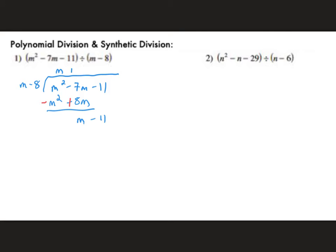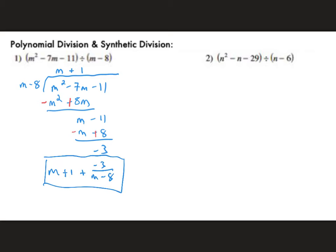The m² terms cancel — drop the next term and repeat. Multiply by 1 to match the leading term, giving m − 8. After the sign change, we're left with a remainder of negative 3. Write the answer as the quotient m + 1, plus the remainder written as −3/(m − 8). Either way of expressing the remainder works, but using the divisor is more specific.